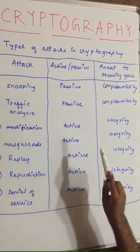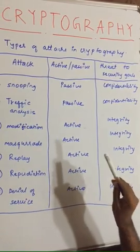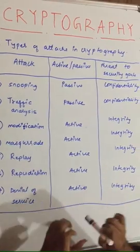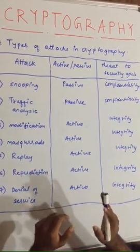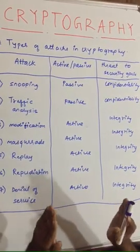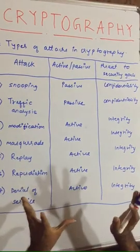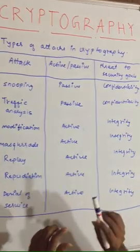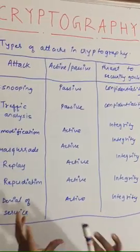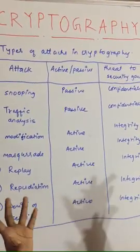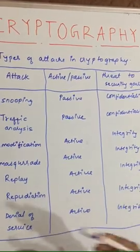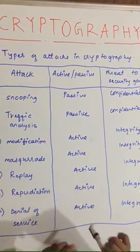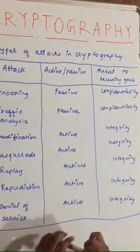There are basically two types of attacks: passive attack and active attack. In a passive attack, the intruder can only observe and cannot make any modification. In an active attack, the intruder can make changes to any message the sender is sending to the receiver or the receiver is sending to the sender.